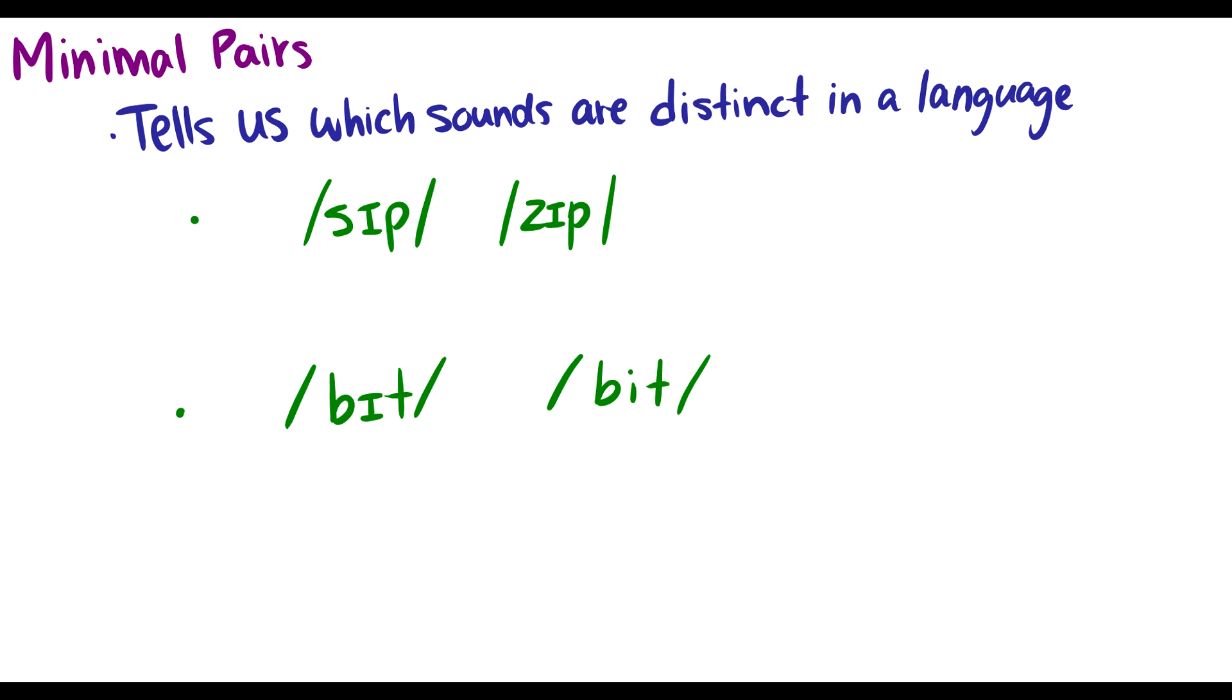So for instance we have two words sip and zip. So these are two English words sip and zip. They differ in this one sound s and z and they mean different things. So we know that s and z are separate sounds in English. So we already knew that but this just gives us evidence and let's take a look at bit and beat. So this i and this e we have the word bit we have the word beat. They mean two different things so they are minimal pairs and they are separate in English as well.